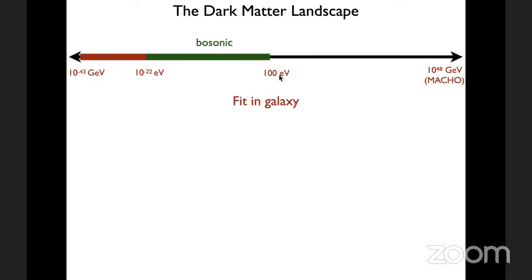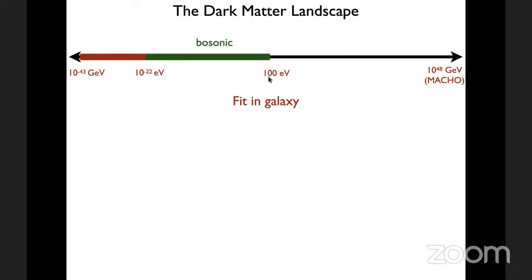For example, if dark matter is a fermion, as its mass goes down its number density goes up. For a fermion, you eventually run into Fermi degeneracy — you can't pack more than one fermion in the same mode. The fact that dark matter fits inside a dwarf galaxy puts a limit on the fermion mass: it has to be larger than around 100 electron volts. If the dark matter is bosonic, that particular limit does not apply.